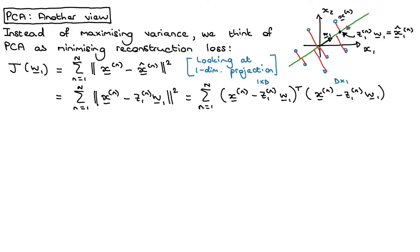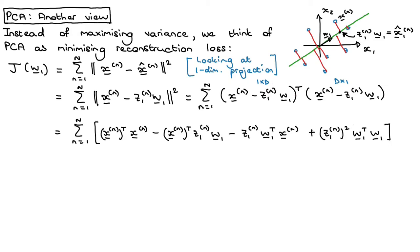Now we're going to multiply out this expression. We take xn transpose times xn, then xn transpose times the reconstruction term, then the reconstruction term transpose times the reconstruction term. Because of the constraint that W1 transpose W1 equals 1, one part simplifies to 1.